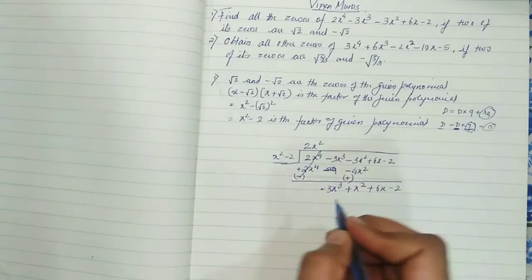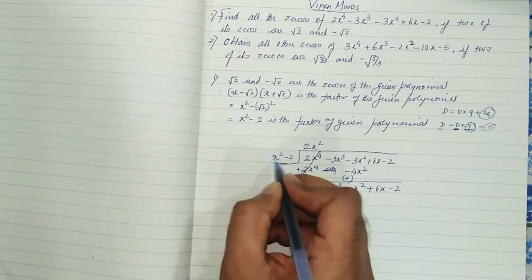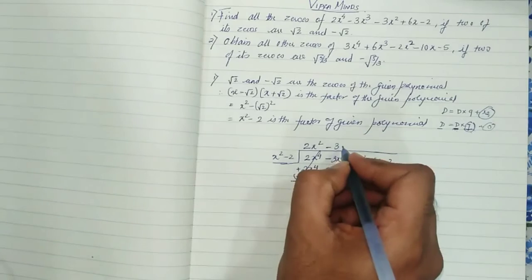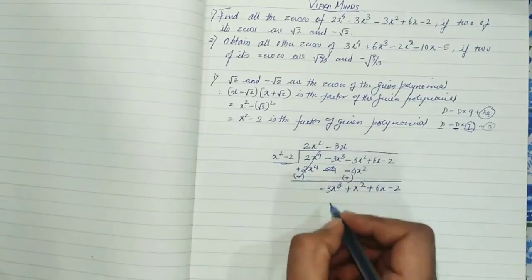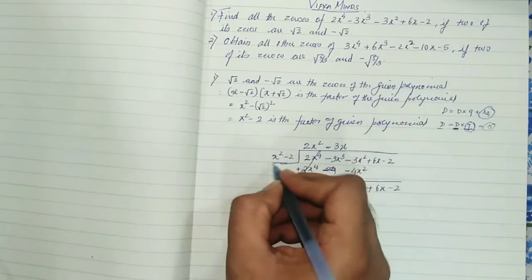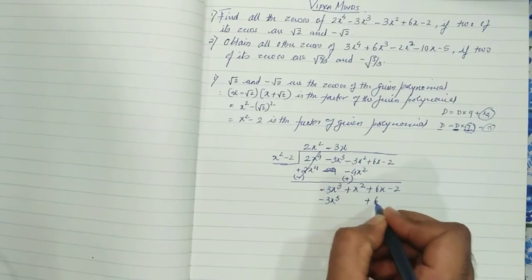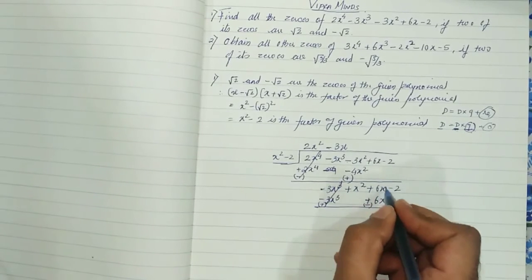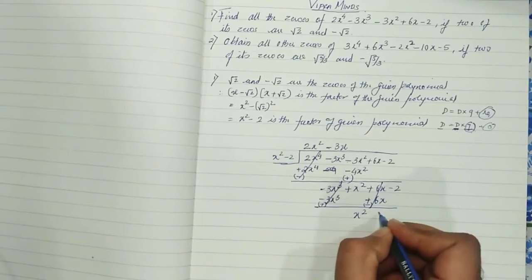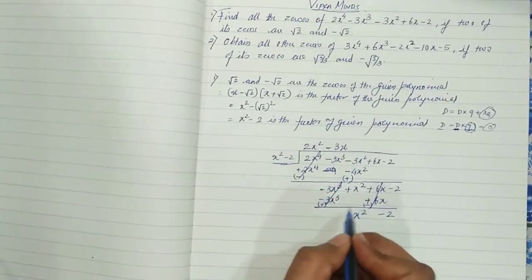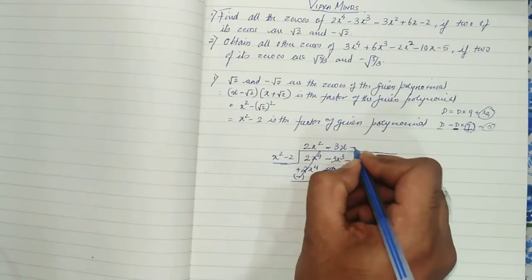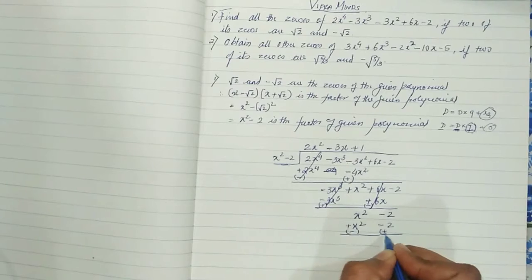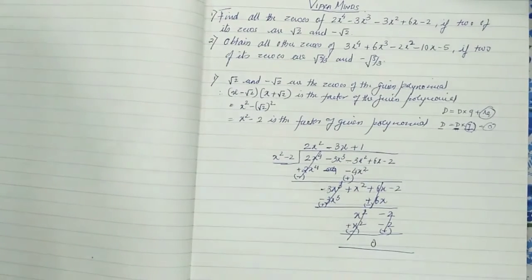Next, to get -3x³, we multiply x² by -3x, giving -3x³. And -3x × (-2) = +6x. When we subtract, this cancels with +6x. What remains is x² - 2. Then 1 × x² = x² and 1 × (-2) = -2, which cancels completely. So the remainder is 0.